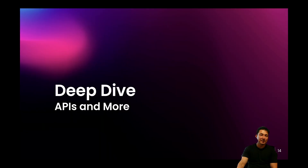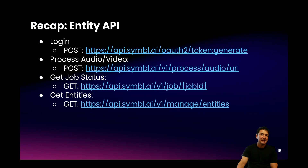Now that we've gone over some of the features, let's go ahead and do a deep dive and look at some of the APIs relating to entities. The asynchronous API is a four-step process. First, you log in, then you either post or link out to a video or audio file to process. Then you poll for job status completion. Finally, you call the get entities API to obtain the list of entities contained within a given conversation. This will list out all of the entities in a given video, audio, or text conversation.